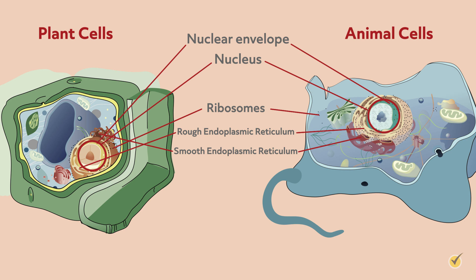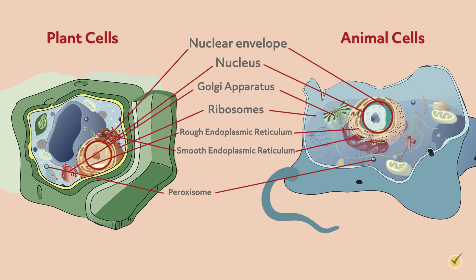Both cell types also contain the Golgi apparatus, which is responsible for modifying and sorting all kinds of proteins from the rough ER. We can think of this like a shipping and receiving center for mailing packages. Both cell types also have peroxisomes in the cytoplasm that break down fatty acid chains and lysosomes that help break down other molecules so that they can be recycled and reused throughout the cell.